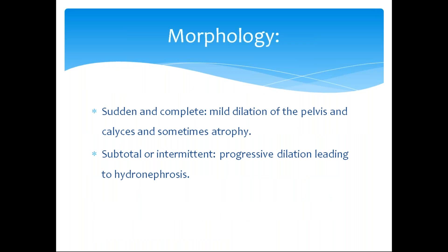To revise: with sudden and complete obstruction, there is only mild dilation of the pelvis and calyces and sometimes little atrophy. With subtotal or intermittent obstruction, there is ample time for the kidney to undergo dilation, cortical atrophy, and interstitial fibrosis — all seen in this chronic course.